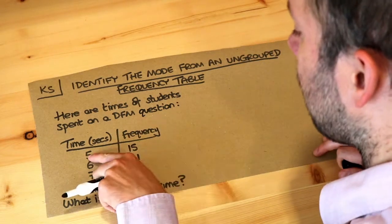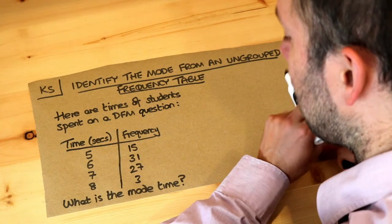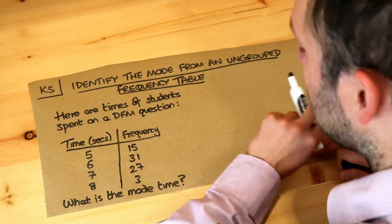So this table says that we had 15 students who got 5 seconds, 31 students who got 6 seconds, etc. And we want to find the mode time.